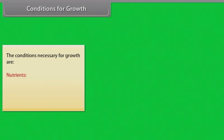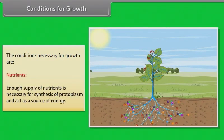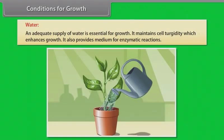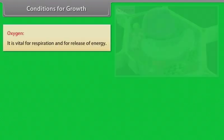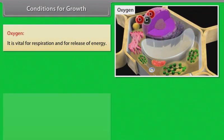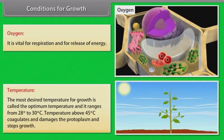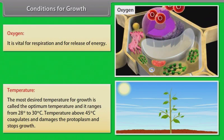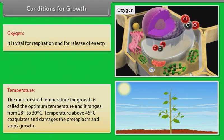Conditions for growth. The conditions necessary for growth are nutrients - enough supply of nutrients is necessary for synthesis of protoplasm and act as a source of energy. Water - an adequate supply of water is essential for growth. It maintains cell turgidity which enhances growth. It also provides medium for enzymatic reactions. Oxygen - it is vital for respiration and for release of energy. Temperature - the most desired temperature for growth is called the optimum temperature and it ranges from 28 to 30 degrees Celsius. Temperature above 45 degrees Celsius coagulates and damages the protoplasm and stops growth.